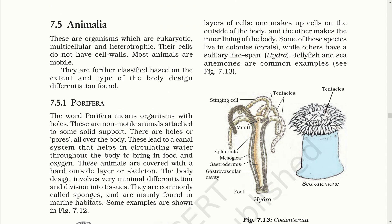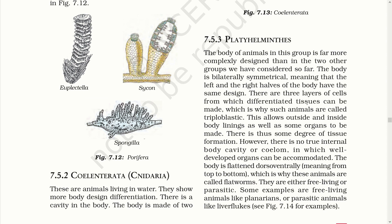Dear students, in the Kingdom Animalia, these organisms have a well-developed nucleus, are multicellular, depend on the environment for food, and lack cell walls. This kingdom has a long list of divisions. In Porifera, the special characteristic is that they are non-motile and their body has pores for circulating water in and out, enabling the organism to obtain food and oxygen from the water. Coelenterata also have a somewhat similar body structure to Porifera, but more differentiated. They live in colonies.